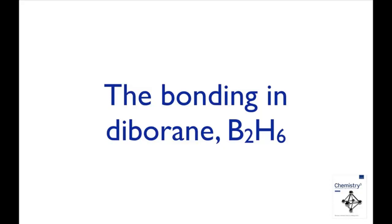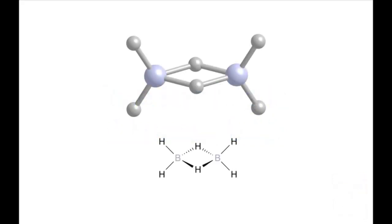The simplest boron hydride that is stable at room temperature is diborane, B2H6. The structure of diborane has two bridging hydrogen atoms.